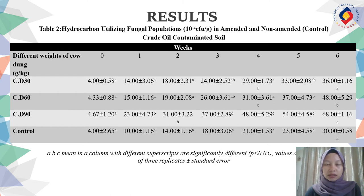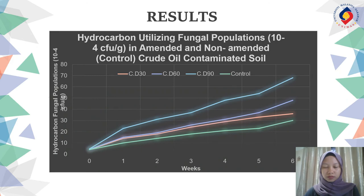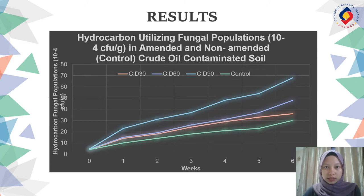Next, this is the result of hydrocarbon utilizing fungal population in amended and unamended crude oil contaminated soil. Based on the table, the hydrocarbon utilizing fungal population (HUFP) showed an increased pattern over the period of study as the treatment weight increases. These increments differ significantly in all the cases.